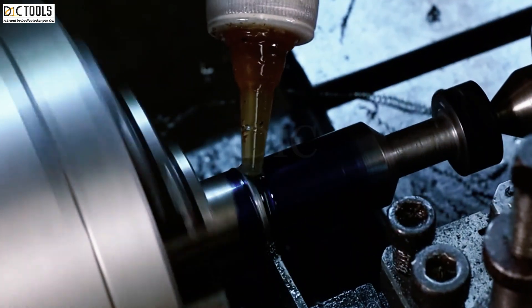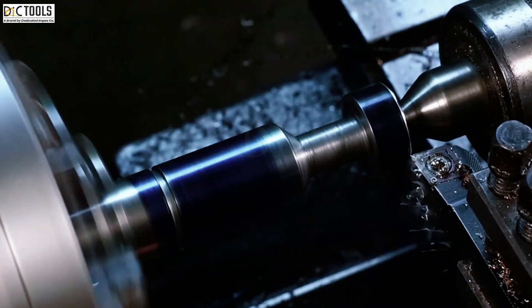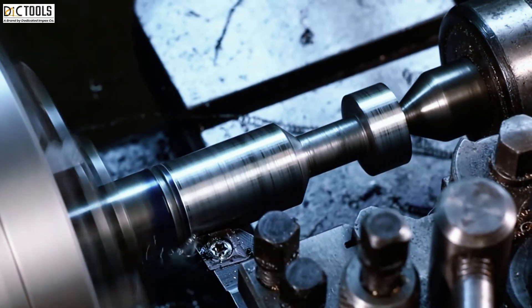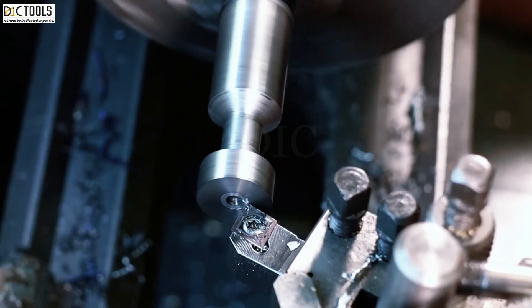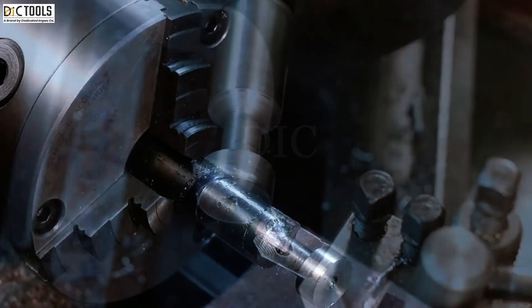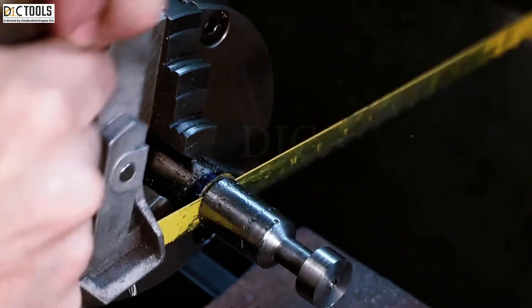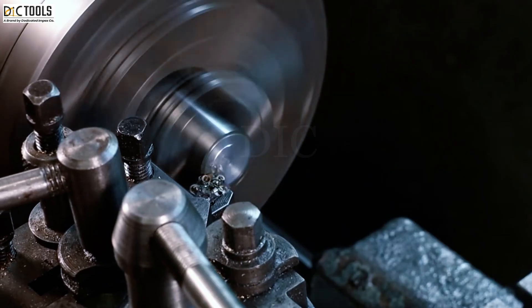Once the materials are selected, they are shaped and tempered to create the specific T-slot cutter design. This may involve using advanced cutting technologies such as CNC machining to achieve the desired shape and dimensions with accuracy.